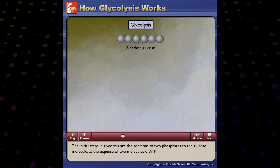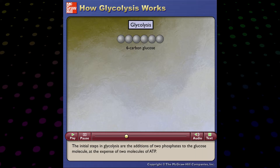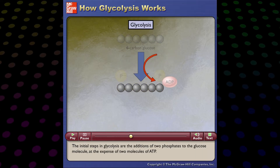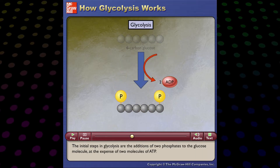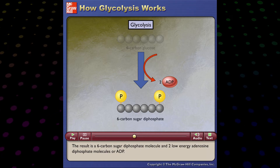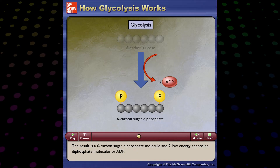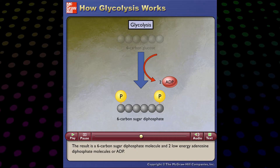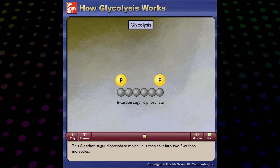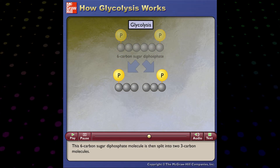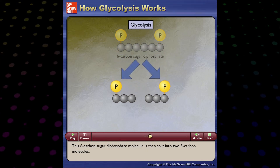The initial steps in glycolysis are the additions of two phosphates to the glucose molecule at the expense of two molecules of ATP. The result is a six-carbon sugar diphosphate molecule and two low-energy adenosine diphosphate molecules, or ADP. This six-carbon sugar diphosphate molecule is then split into two three-carbon molecules.